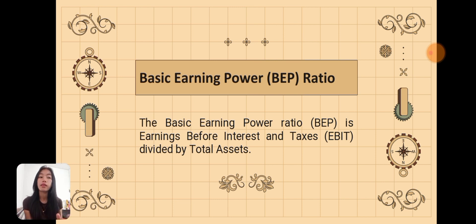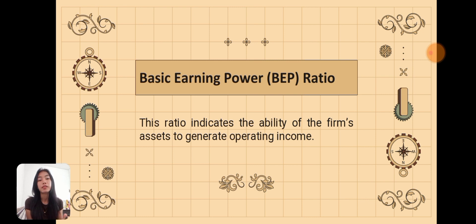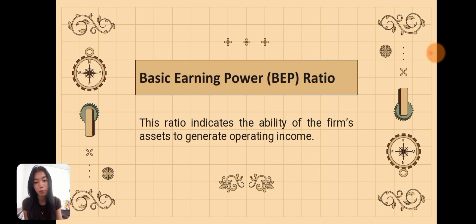The basic earning power ratio, or BEP, is earnings before interest and taxes divided by total assets. This ratio indicates the ability of the firm's assets to generate operating income. Earning power represents a company's ability to generate profits, and it compares a company's income to its total assets.